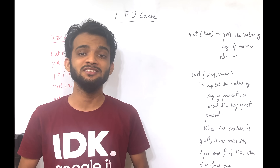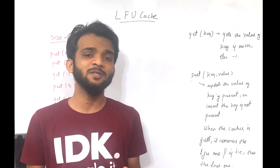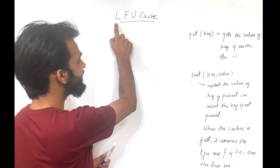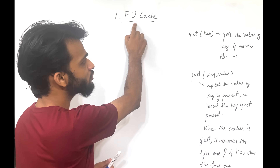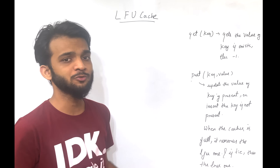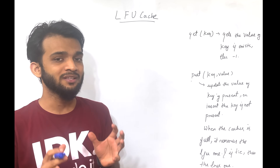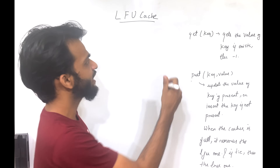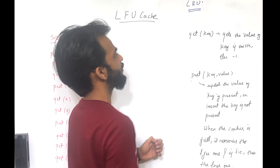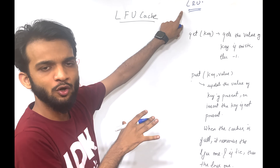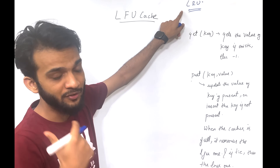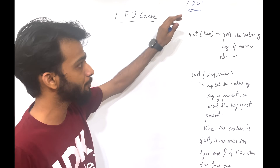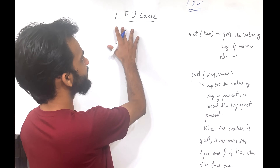Hey everyone, welcome back to the channel. Today we will be solving a problem from LeetCode which is under the Hard category — the problem is termed as Least Frequently Used Cache. In order to solve this problem there is a simple prerequisite: you should have solved the Least Recently Used Cache, that is the LRU Cache. I'll be leaving the link in the description for LRU Cache, so make sure you check it out before starting.